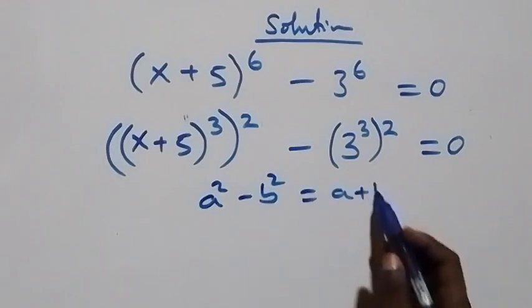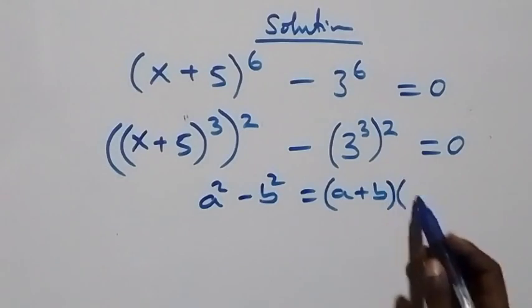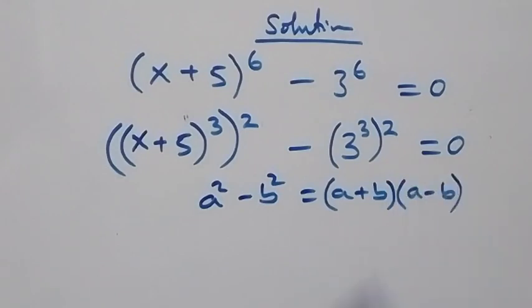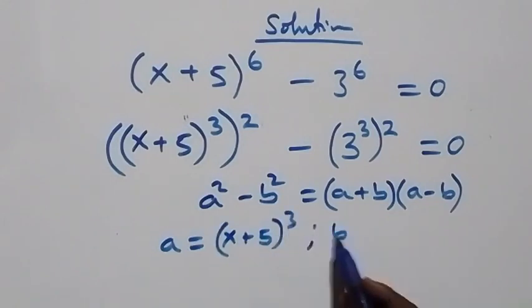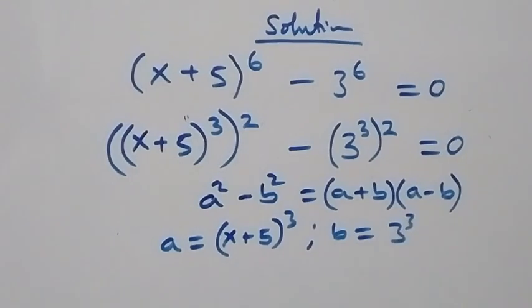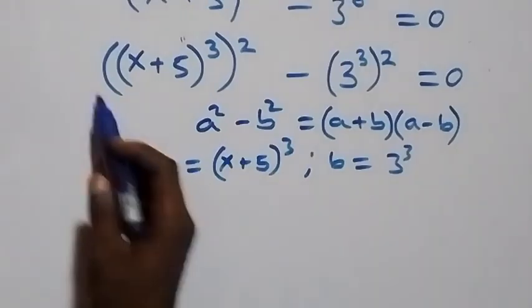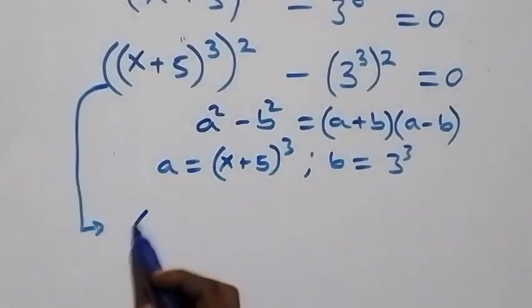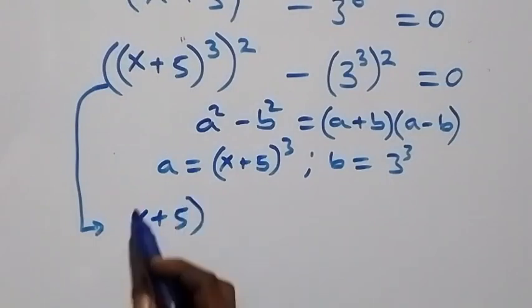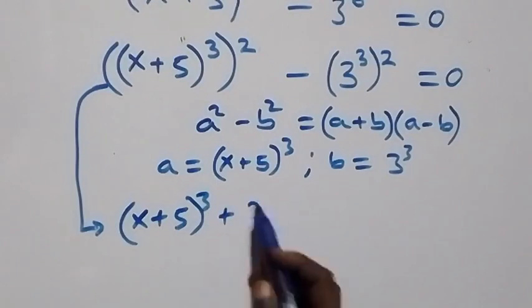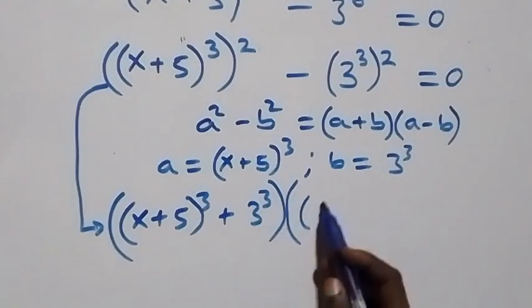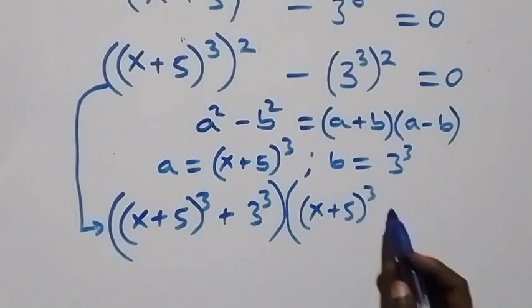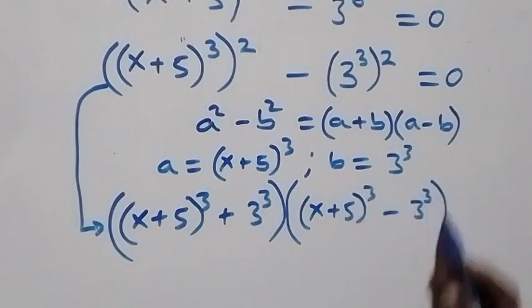And a squared minus b squared factors as a plus b into a minus b. Here a is the same thing as x plus 5 raised to power 3, and b is the same thing as 3 raised to power 3. So this becomes x plus 5 raised to power 3, plus 3 raised to power 3, in brackets, times x plus 5 raised to power 3, minus 3 raised to power 3, in brackets.